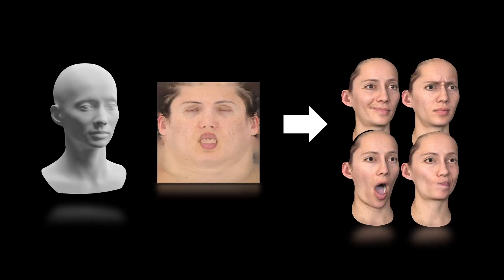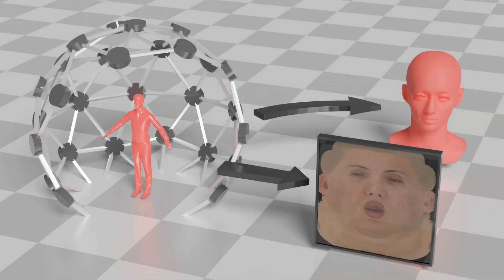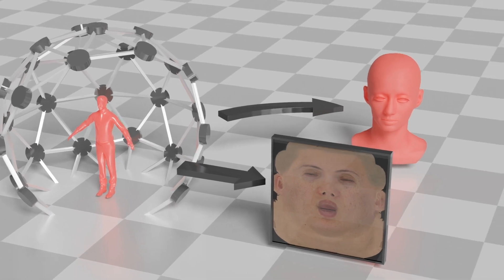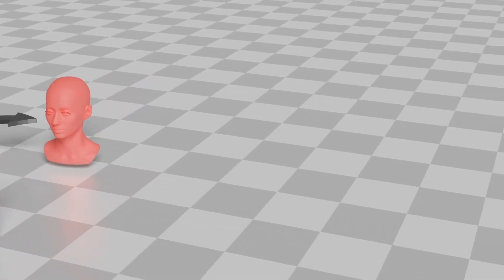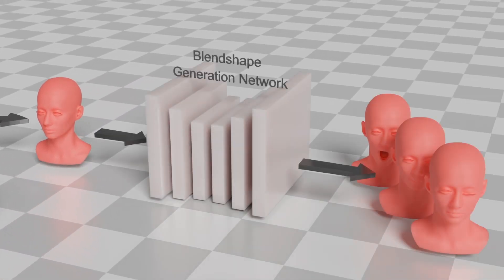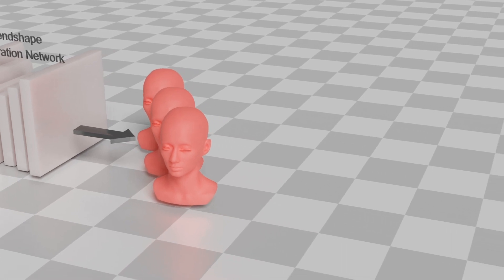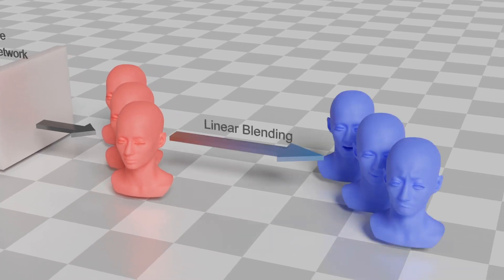Given neutral geometry and albedo map, our framework can generate four face rig assets. Our pipeline takes neutral geometry and neutral albedo map as inputs. First, the neutral geometry is fed into our blend-shape generation network to generate a set of blend-shape geometries. We then use blending weights defined by artists to generate 26 facial expressions.